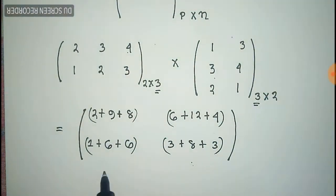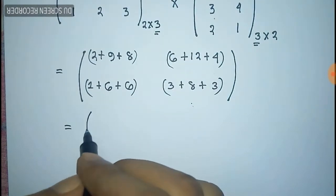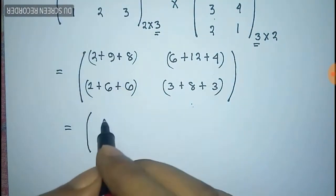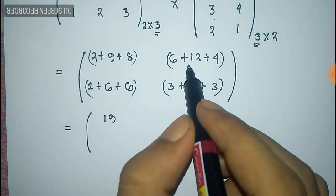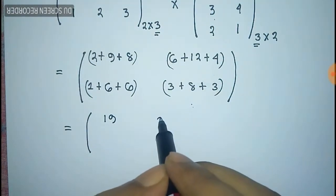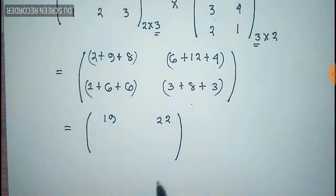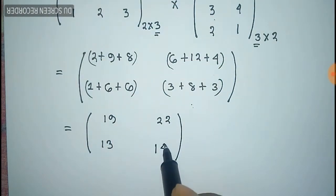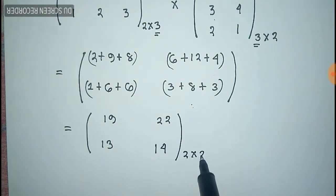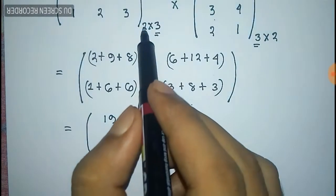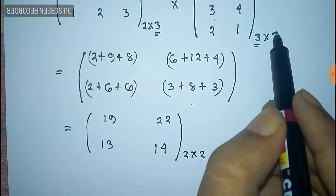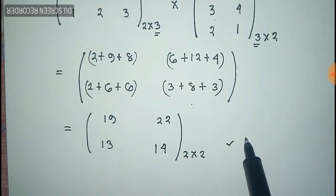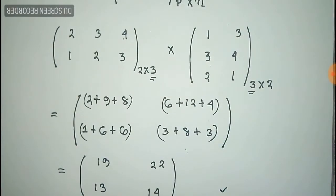Now we simplify: 2+9+8 = 19, and 6+12+4 = 22; 1+6+6 = 13, and 3+8+3 = 14. So the resulting matrix is: 19, 22 / 13, 14 — the order of this matrix is 2 by 2, with 2 coming from the rows of the first matrix and 2 from the columns of the second matrix. This is a 2 by 2 matrix, and thus we can multiply any matrices using this rule.